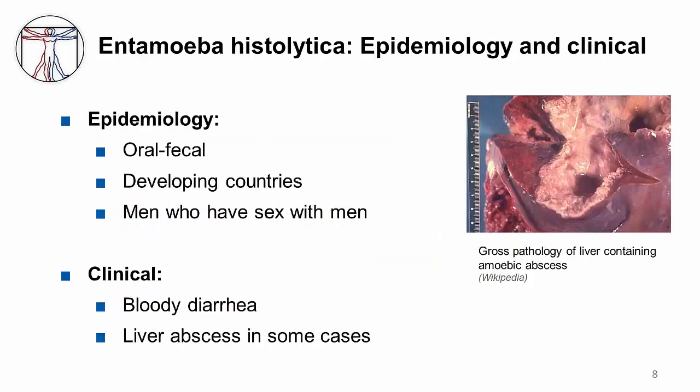Entamoeba histolytica causes amoebic dysentery and liver abscesses. You acquire the infection by ingesting cysts via the fecal-oral route, through contaminated food and water. The infection occurs worldwide, but we mainly see it in tropical countries. In the U.S., one population that is affected is men who have sex with men.